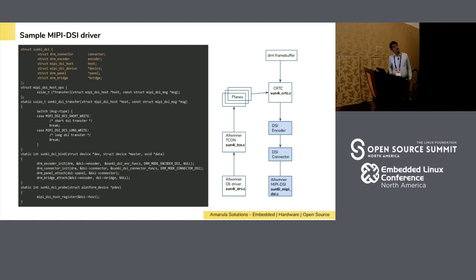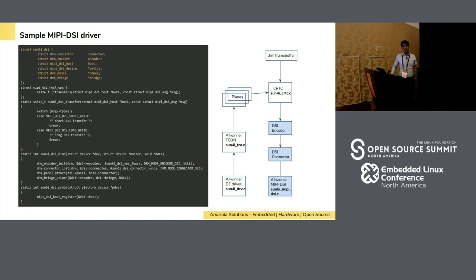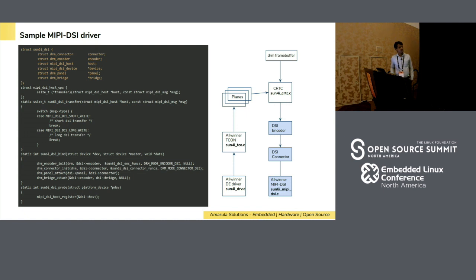This is a typical MIPI DSI controller layer where we manage the encoder and connector. The bind call creates an encoder. The encoder has a macro — encoder_DSI — and we need to create a connector — connector_DSI. Once we create the connector and encoder, we need to give the panel driver a panel core so the controller is registered to these connectors. The panel driver can enumerate those connectors and encoders during Linux boot up. If you have a bridge and your controller supports it, you need to attach the bridge as well.